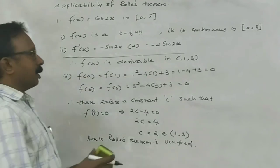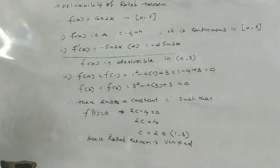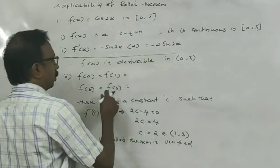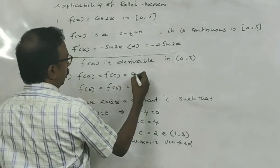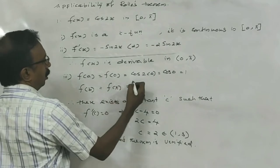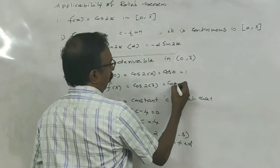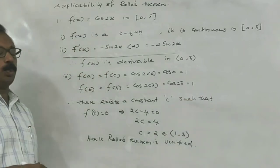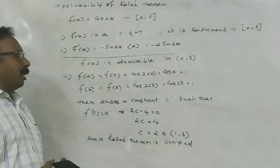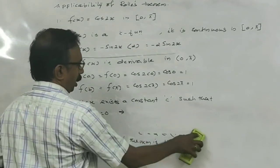Therefore F of X is derivable in the open interval 0 to pi. Now F of A equals F of 0: substituting cos 2 times 0 equals cos 0 equals 1. And F of pi equals cos 2 pi, which is also 1. Since even multiples of pi give cosine equal to 1, F of A equals F of B equals 1. All conditions are satisfied, so there exists a constant C such that F dash C equals zero.